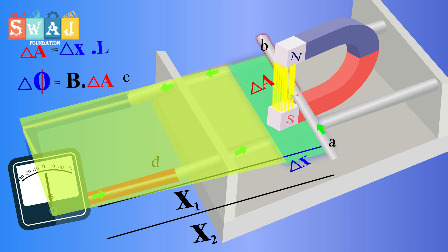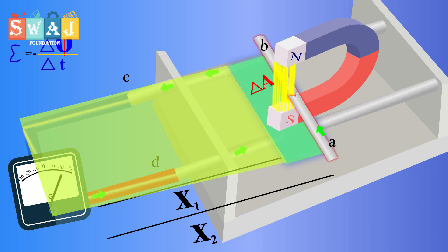The increase in flux del phi equals del A into B. Now, motional EMF equation becomes e equals minus del phi over del t.